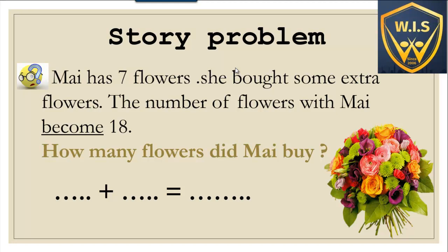Story problem: Maya has seven flowers. She bought some extra flowers, but we do not know how many flowers she bought. The number of flowers Maya has becomes eighteen. How many flowers did Maya pay? Maya has seven flowers, so we write seven. We leave a space for the unknown. In the end, the number becomes eighteen.